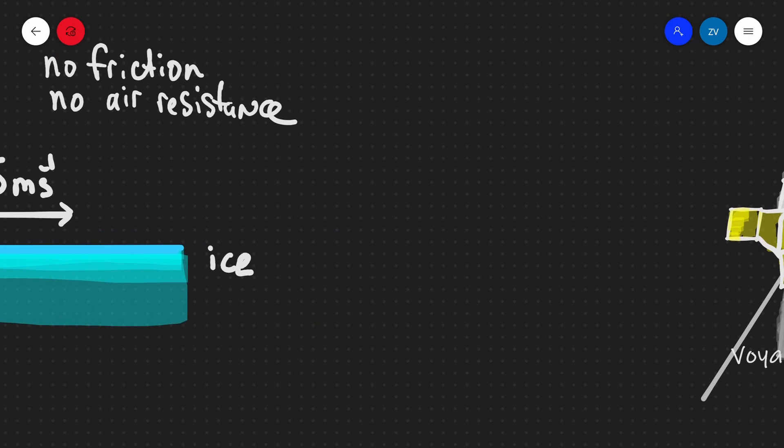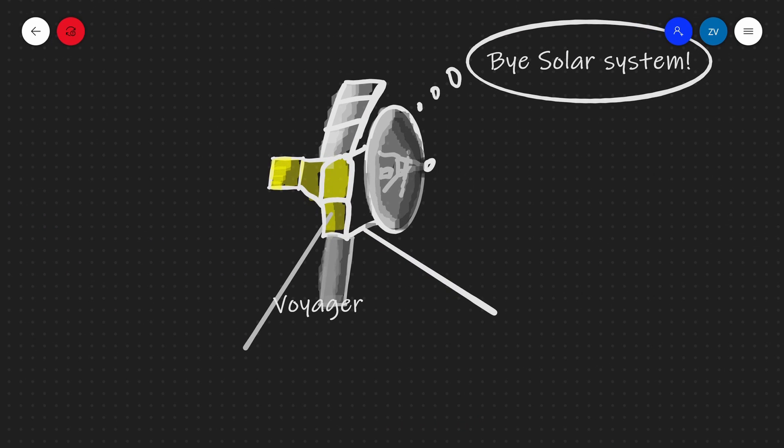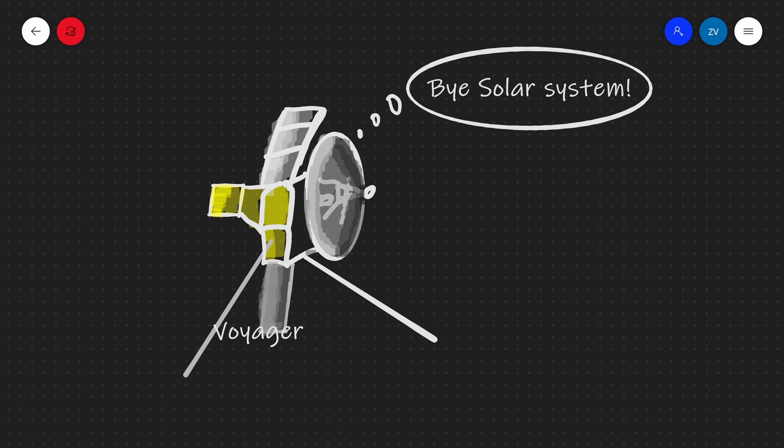Another example would be something like a space probe, something like the Voyager, which has recently left the solar system. The Voyager spacecraft actually has virtually no forces acting on it. It's very far away from any gravitational objects.